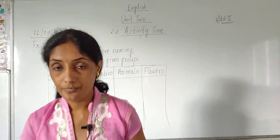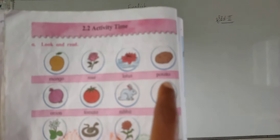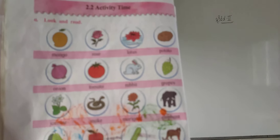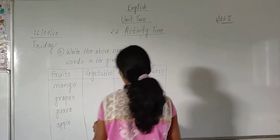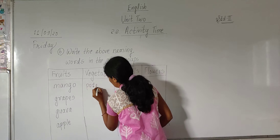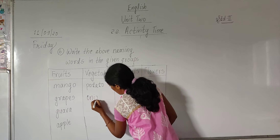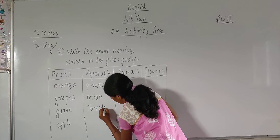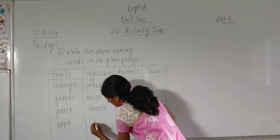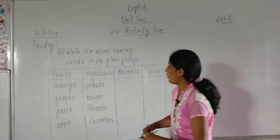In vegetables, we have potato, onion, tomato, and cucumber. Onion — in Marathi we call it kanda. I will tell you meanings of all these words in Marathi. So in vegetables we write potato, onion, tomato, and cucumber.